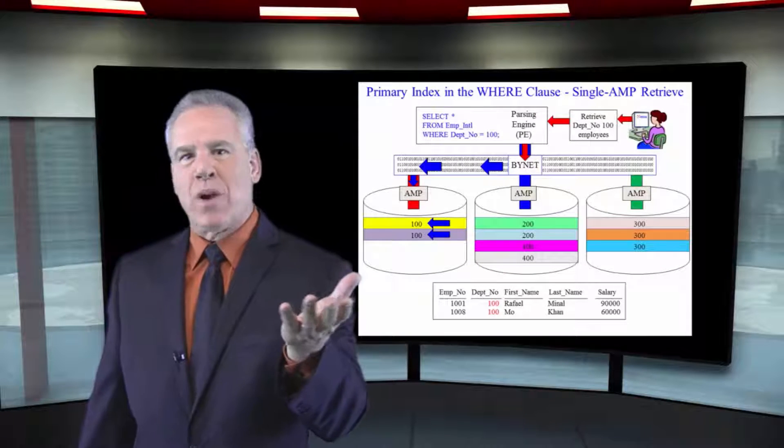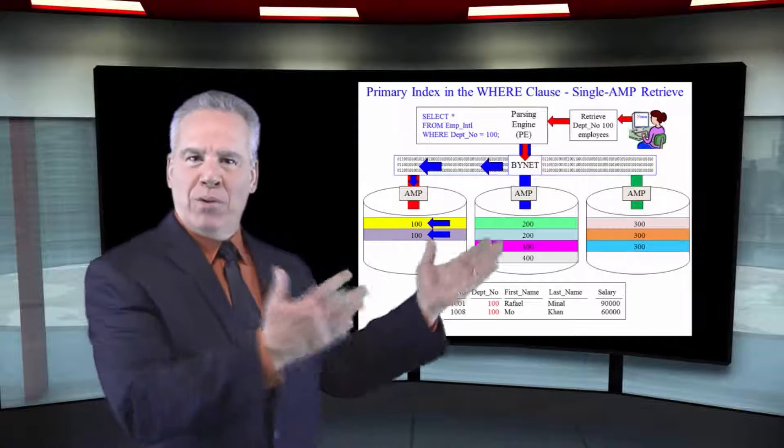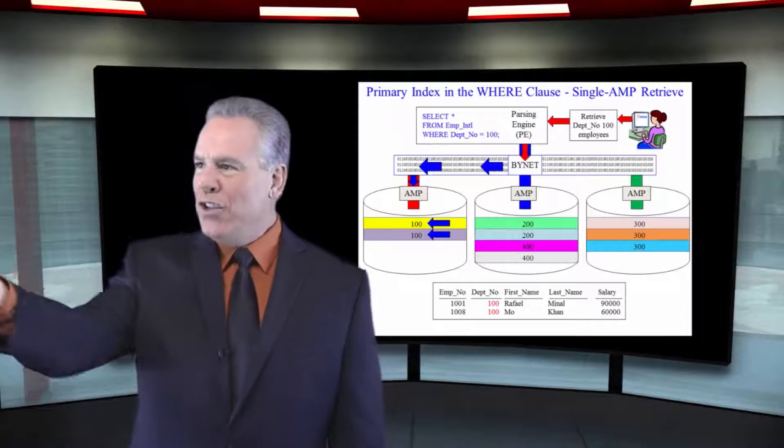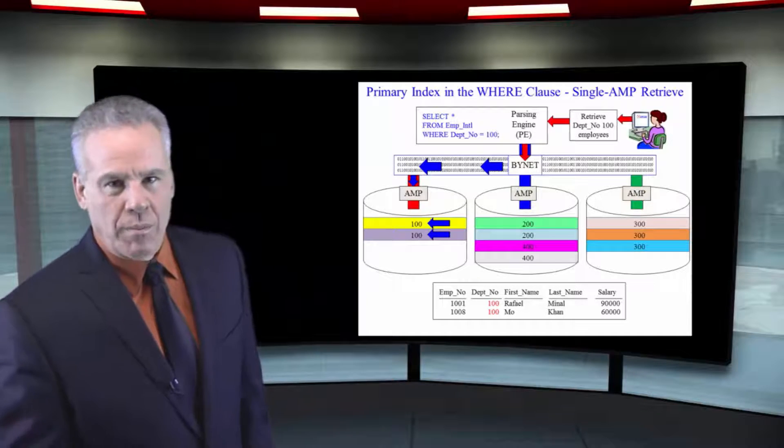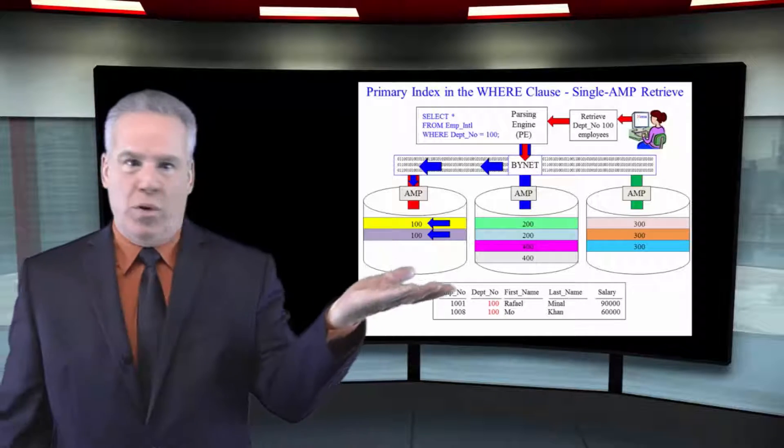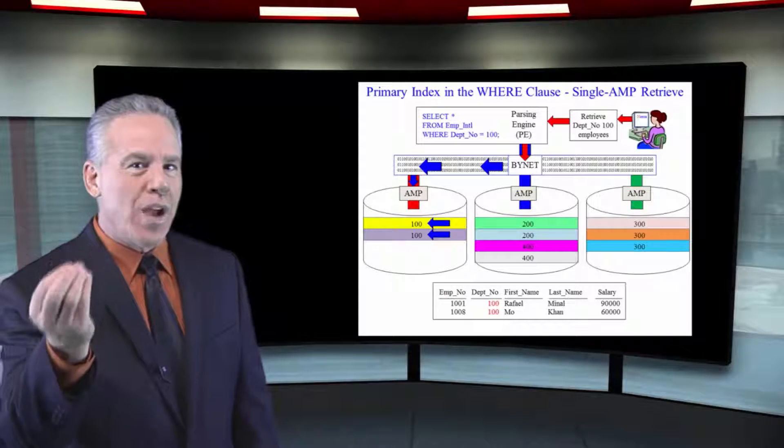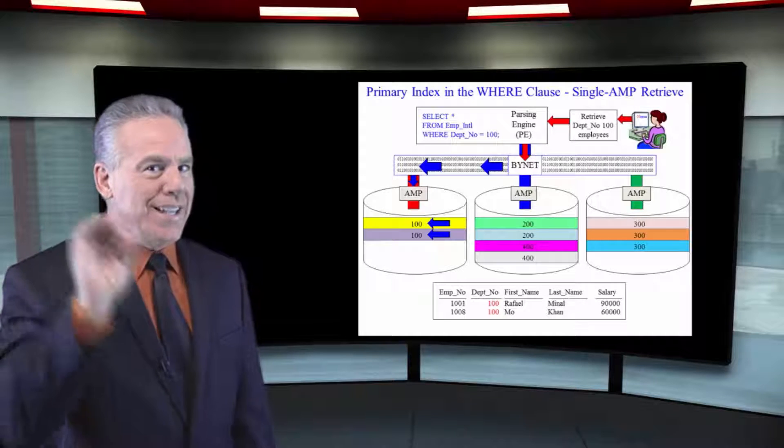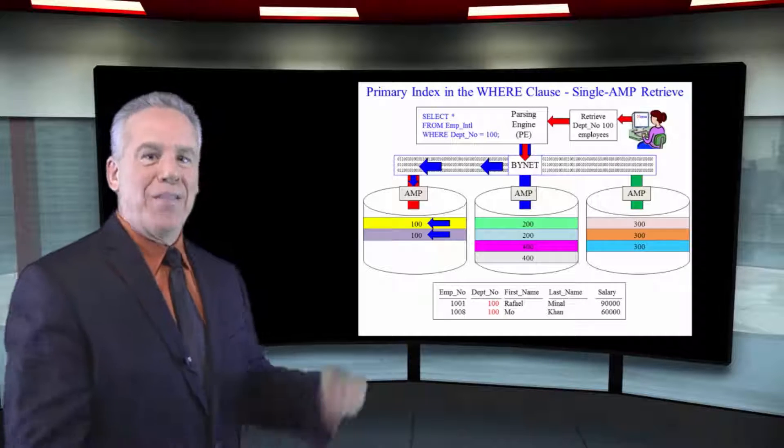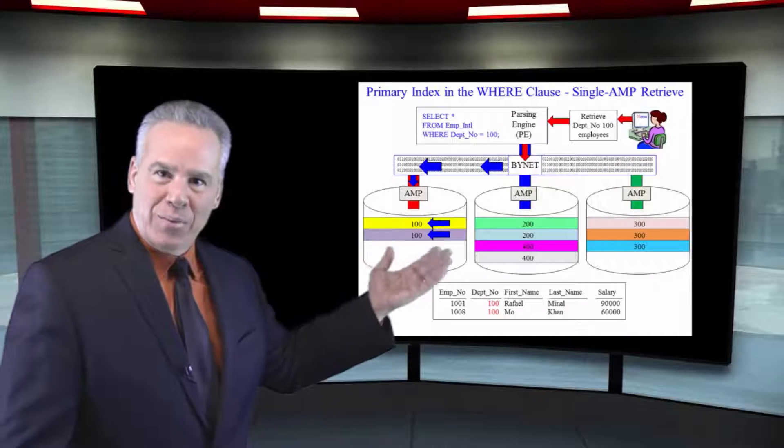Oh, we'll find out next. You might have had a unique primary index on your table on employee number. But when you ask the user community what do you query on, they go, we query on department number. What about employee number? Nah, I never used that. I don't know their employee numbers. So that's why you might create a non-unique primary index on DEPNO instead of a unique primary index on employee number.